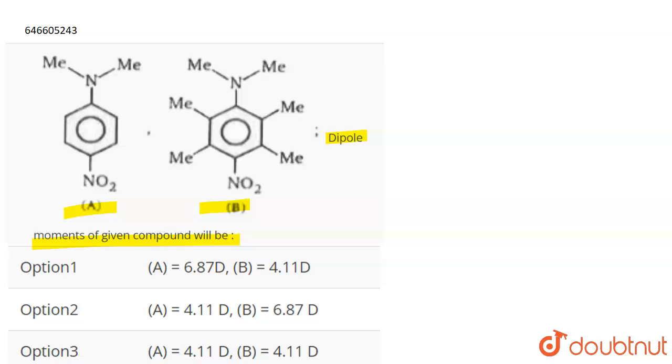Now the direction of dipole moment here will be towards nitrogen. This will also be towards nitrogen because nitrogen is more electronegative, and the direction of dipole moment is towards the electronegative atom. Here also it will be towards nitrogen atoms. So all in all, the resultant will be towards the downward direction. The dipole moment is going to be higher.